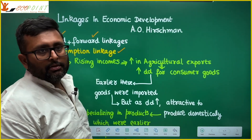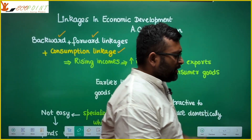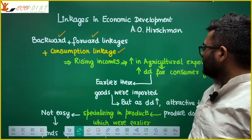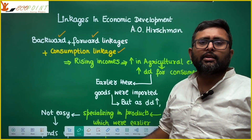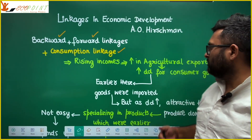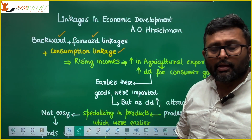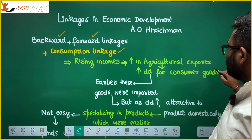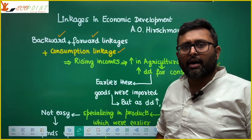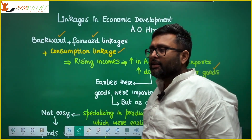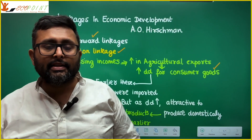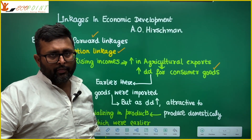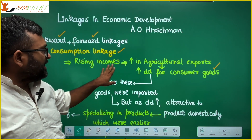If there are rising incomes in some country that is experiencing an increase in income, then this increase in income is also going to increase the agricultural export. And this agricultural export will ultimately increase the demand for the consumer. Why agricultural export? We are talking about late industrializing countries — agriculture is the only important sector.